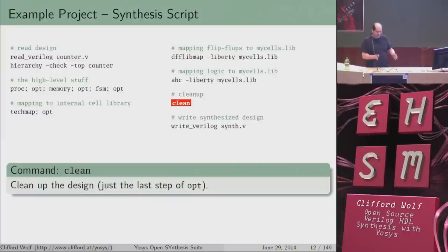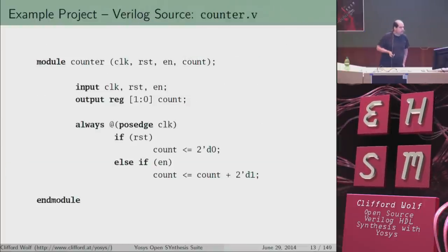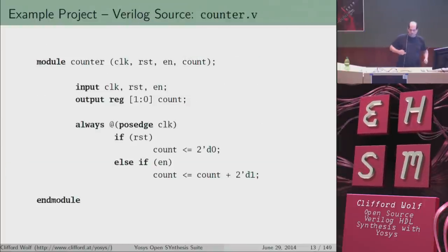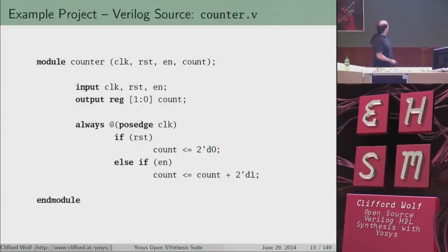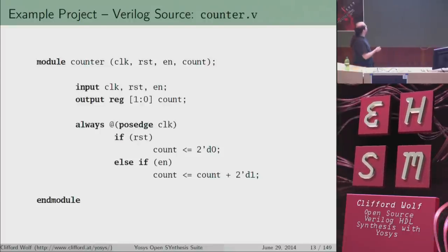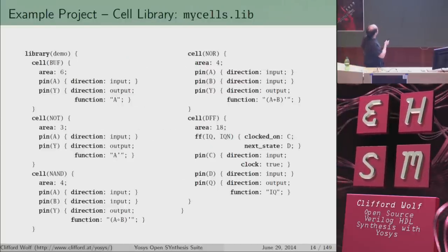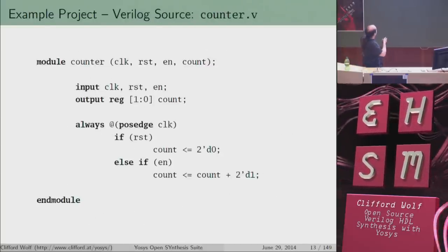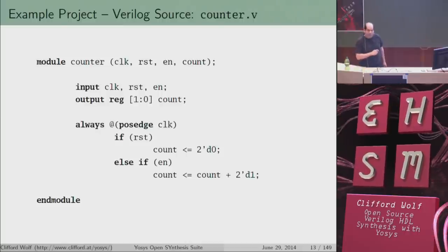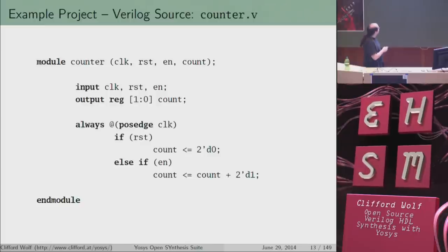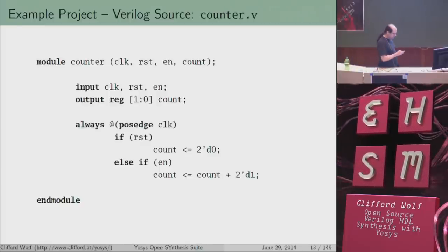A Liberty file is a standardized file format to describe cell libraries. Then I do logic optimization and map everything to what I have on my target architecture, clean up with a tiny version of opt, and write the results. The design we're synthesizing is very simple: it's a counter with an asynchronous reset and an enable signal. The count output goes to zero if reset is high, stays the same if enable is low, and counts up if enable is high and reset is low.